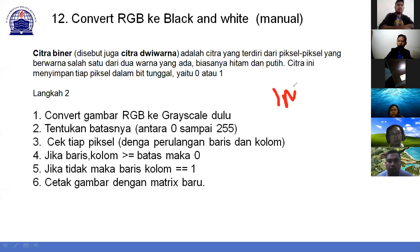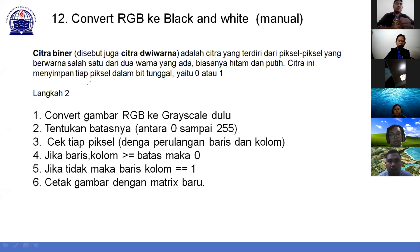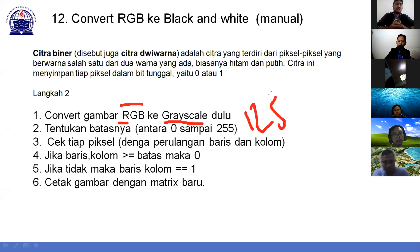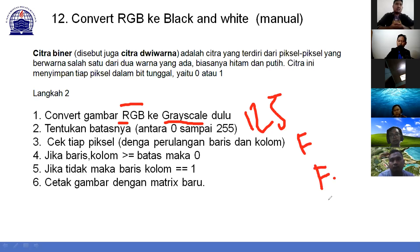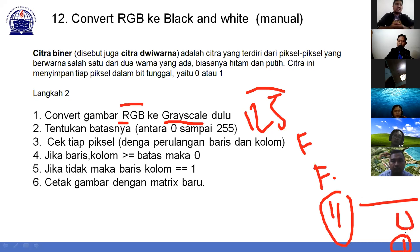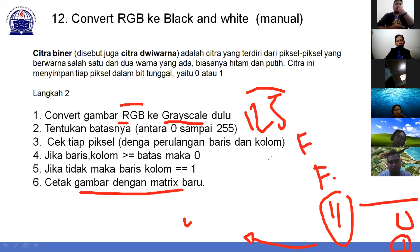Kalau menggunakan fungsi kita tinggal im2bw. Kalau manual agak panjang tapi tidak rumit. Langkah-langkahnya: pertama convert dulu RGB ke grayscale sehingga gambar RGB hanya satu layer. Selanjutnya tentukan batasnya antara 0 sampai 255, contohnya 125. Terus cek tiap piksel dengan perulangan baris dan kolom menggunakan 2 for (for baris, for kolom), lalu cek. Ketika nilai piksel lebih besar dari 125 ubah menjadi 0, jika tidak ubah menjadi 1. Variable baru akan menjadi 0 dan 1, lalu cetak menjadi gambar black and white.